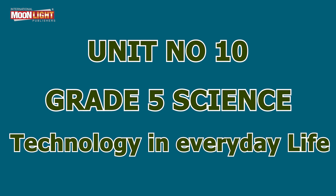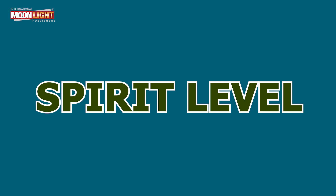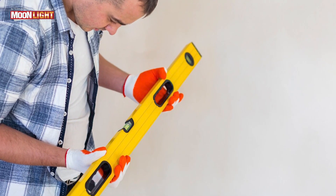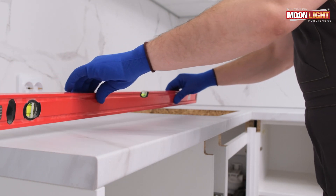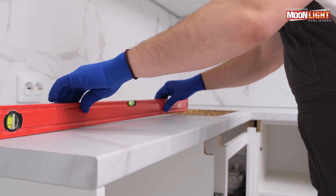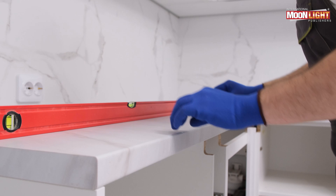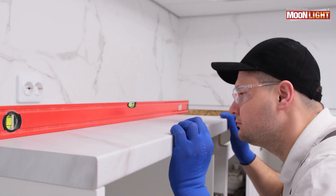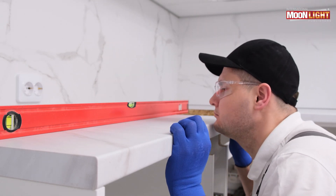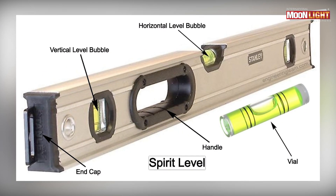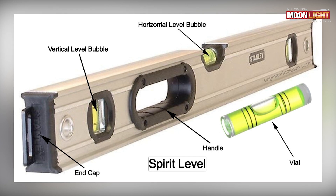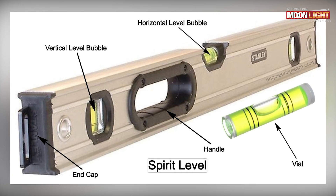In your book, today's next topic is the spirit level. This is an instrument that we use to check whether any surface is horizontal or not. Normally, carpenters, plumbers, tile fitters, or electricians use this instrument. Inside the spirit level, there is a bubble tube, which contains a colored liquid — normally colored spirit — that is fitted into the spirit level.